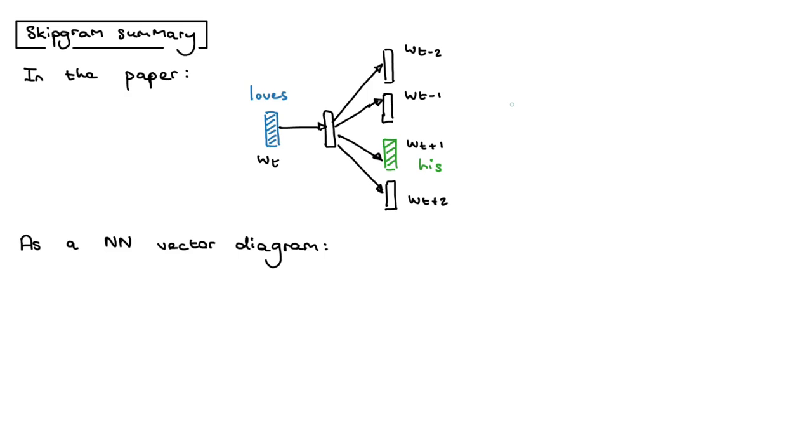So I wanted to redraw this picture as a neural network vector diagram. We haven't really spoken about Skipgram as a neural network, but it's helpful to think about this using neural network vector diagram notation because that's really how you would implement this if you were using a package like PyTorch or TensorFlow.